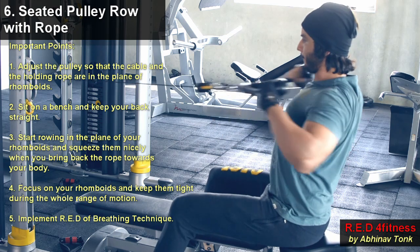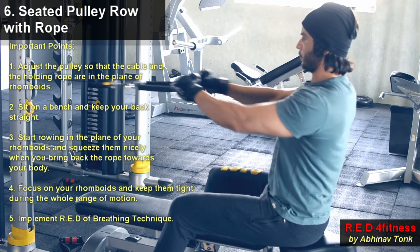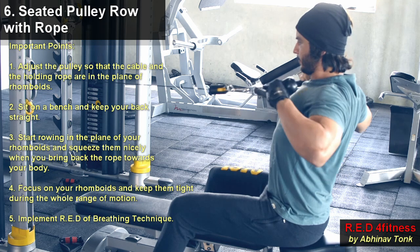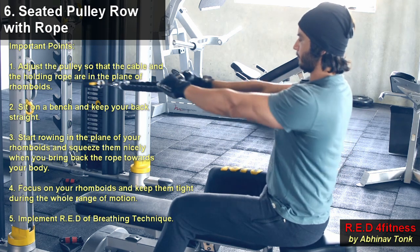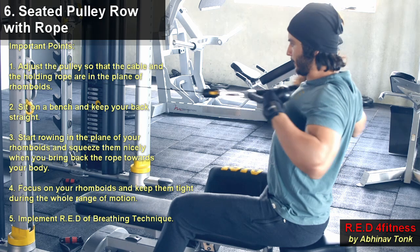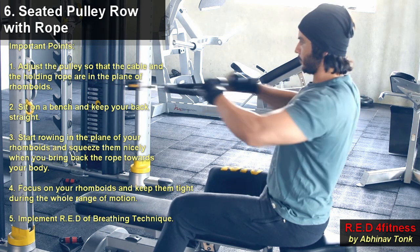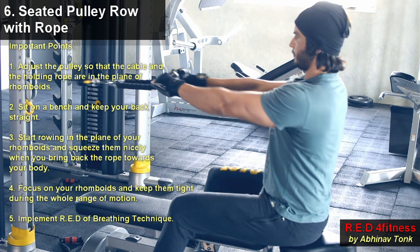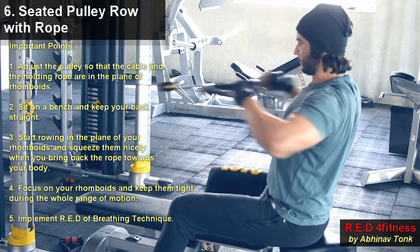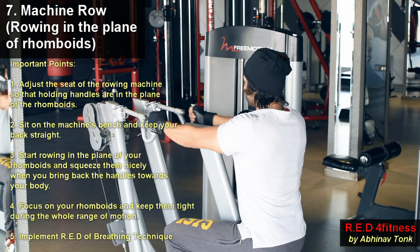The next exercise is the seated pulley row with rope, which is similar to the previous exercise. Sit on a bench, keep your back straight, and adjust the pulley so the cable and holding rope are in the plane of the rhomboids. Row in the plane of the rhomboids and squeeze them nicely when you bring the rope back towards your body.